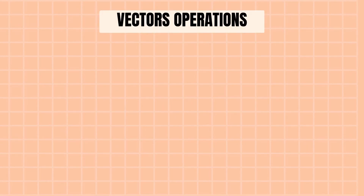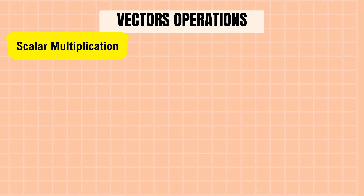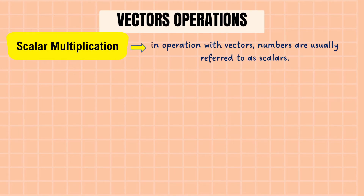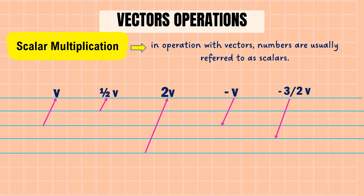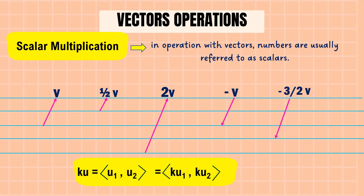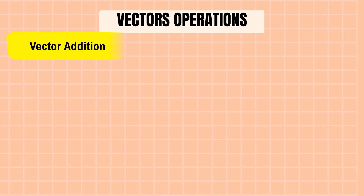Next, we're going to discuss vector operations. The first operation is scalar multiplication. In operations with vectors, numbers are usually referred to as scalars. For example: this is v, this is ½v, this is 2v, this is −v (the opposite of v), and this is −3/2 v. The formula for scalar multiplication is: ku = (ku₁, ku₂).